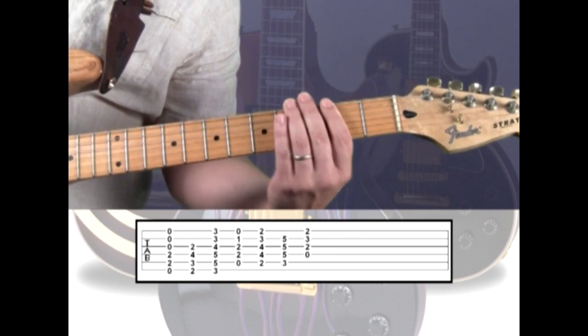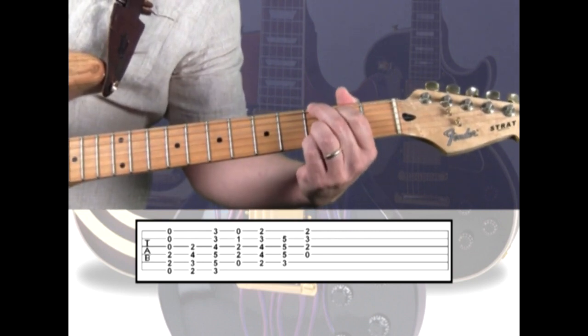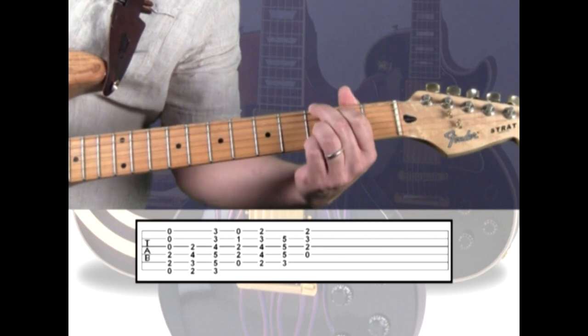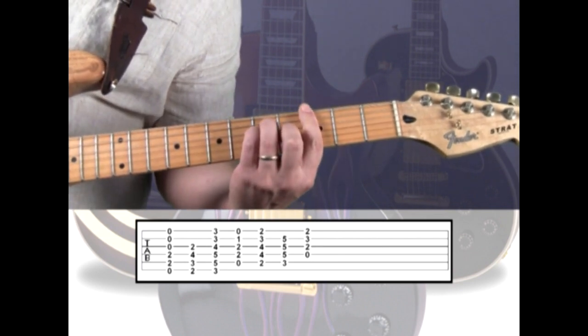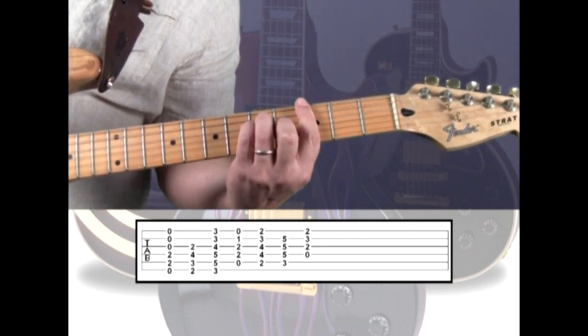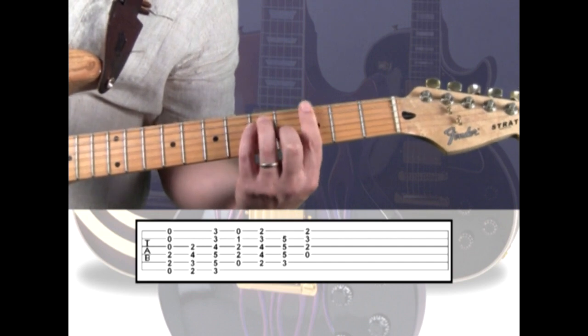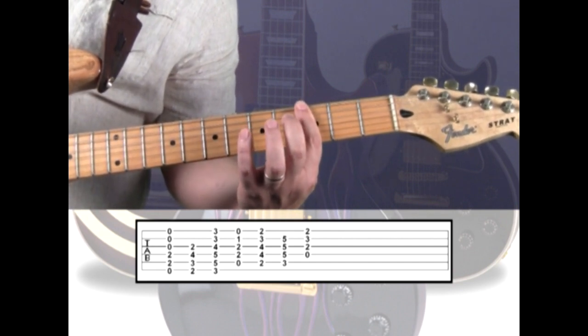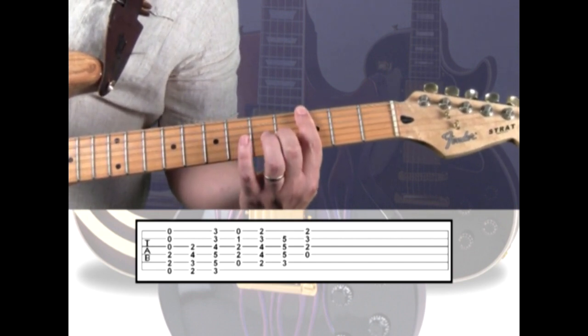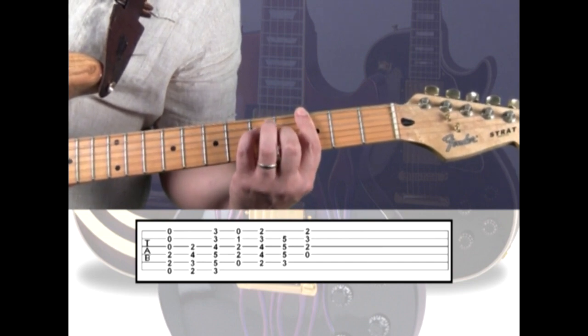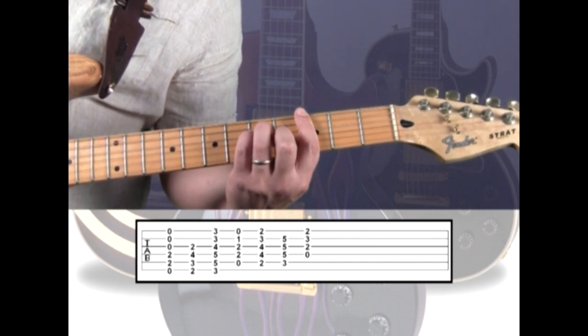For G, you can play the open G chord. Here I'm using the G major bar chord. So bar your index across the 3rd fret of all 6 strings. Add your middle finger to the 3rd string 4th fret, pinky to the 4th string 5th fret, and ring to the 5th string 5th fret.